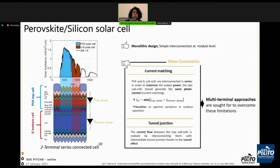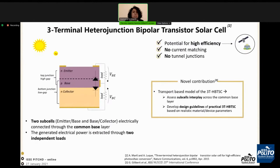Among the multi-terminal approaches, the novel one is proposed by Marti, based on a three-terminal heterojunction bipolar transistor. So the new solar cell, the three-terminal heterojunction bipolar transistor solar cell, is able to achieve high efficiency, avoiding current matching and tunnel junctions.